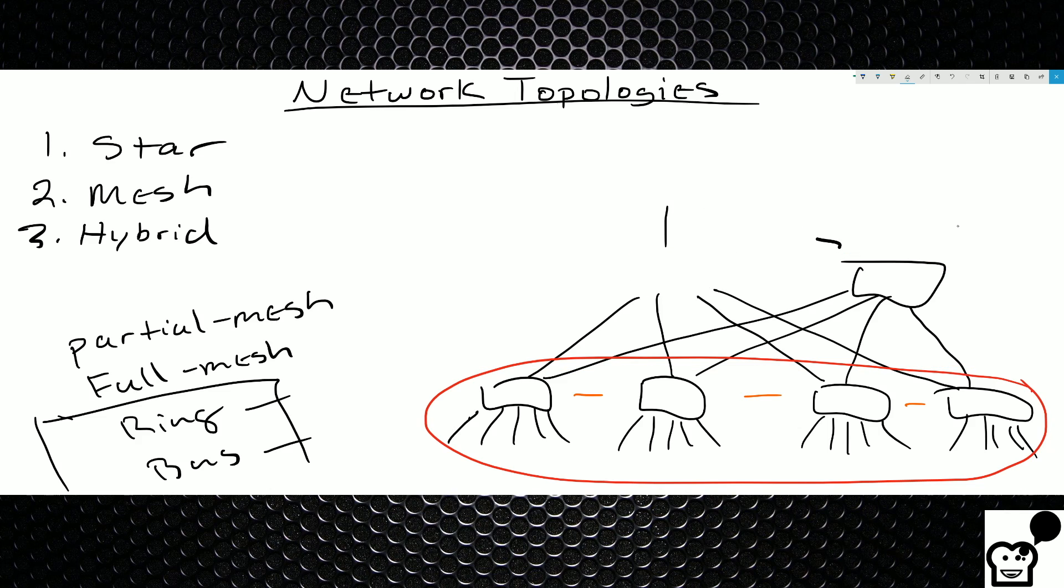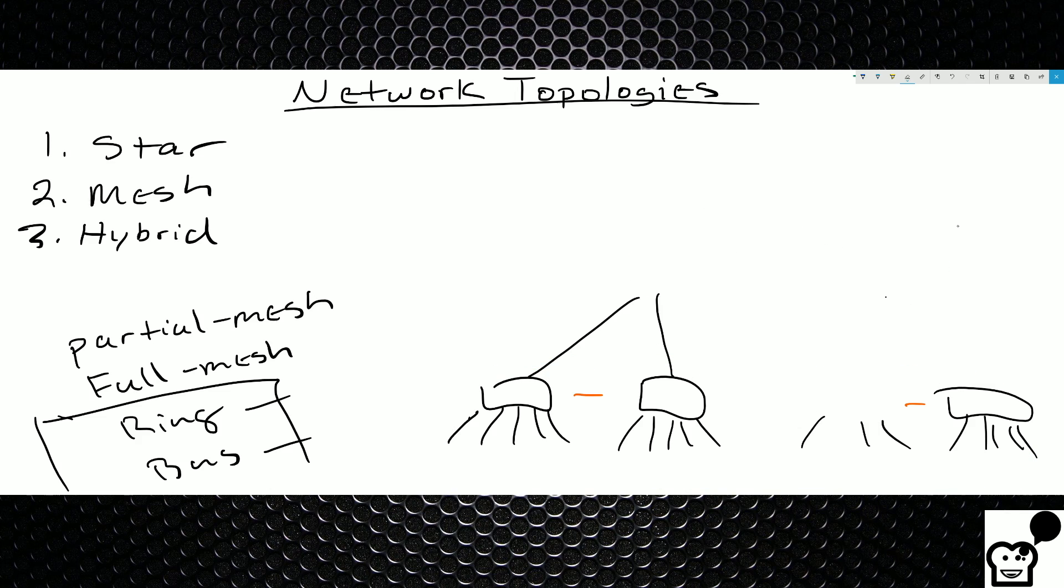And really that's about all that needs to be covered, especially for the exam purposes. Star, mesh and hybrid are your three main network topology types. And mesh can be divided into a full or partial mesh. It's pretty self-explanatory. I don't mean to insult anybody's intelligence but it's pretty simple stuff.